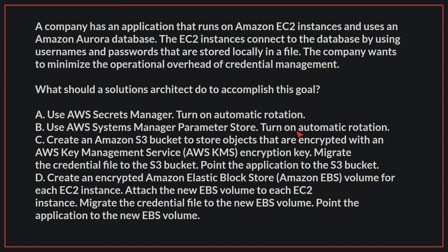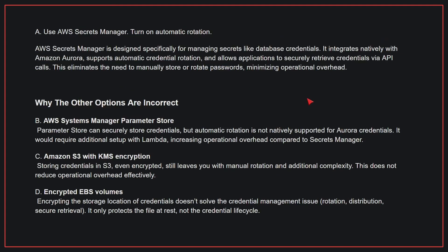The correct answer is A: Use AWS Secrets Manager and turn on automatic rotation. AWS Secrets Manager is designed specifically for managing secrets like database credentials. It integrates natively with Amazon Aurora, supports automatic credential rotation, and allows applications to securely retrieve credentials via API calls. This eliminates the need to manually store or rotate passwords, minimizing operational overhead.